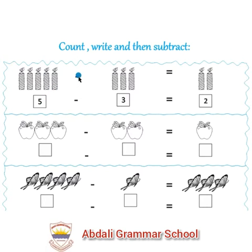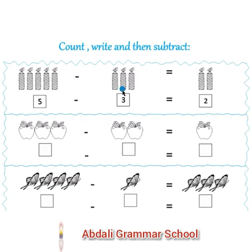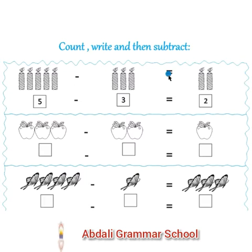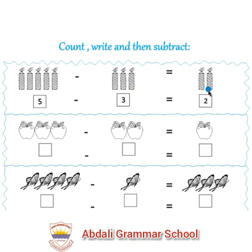Minus, next count candles. 1, 2, 3. This is number 3. 5 minus 3 is equal to how many candles are left? 1, 2. This is number 2.